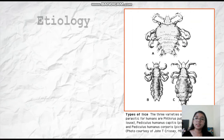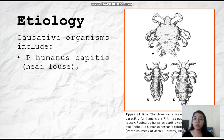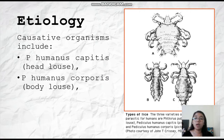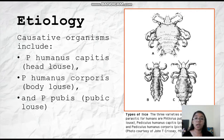So what is the etiology of this? The causative organisms include P. humanus capitis, the head lice, which are found on the scalp; P. humanus corporis, the body lice, which are found on clothing; and P. pubis, the pubic lice, which are found in the pubic area. As you can see in this picture, A is the pubic lice, which looks like a crab — that is why it is also called the crab lice. B is the head lice, and C is the body lice.